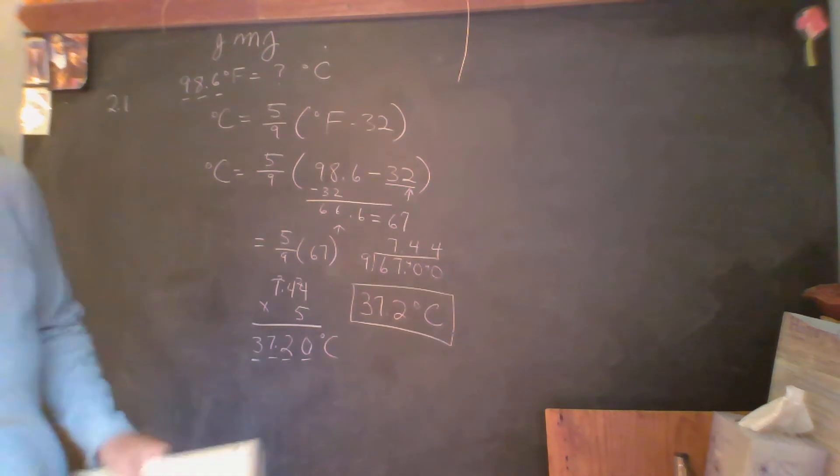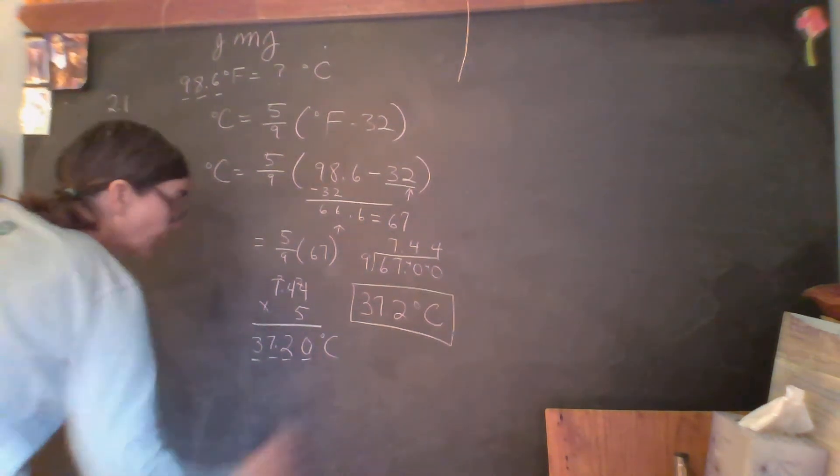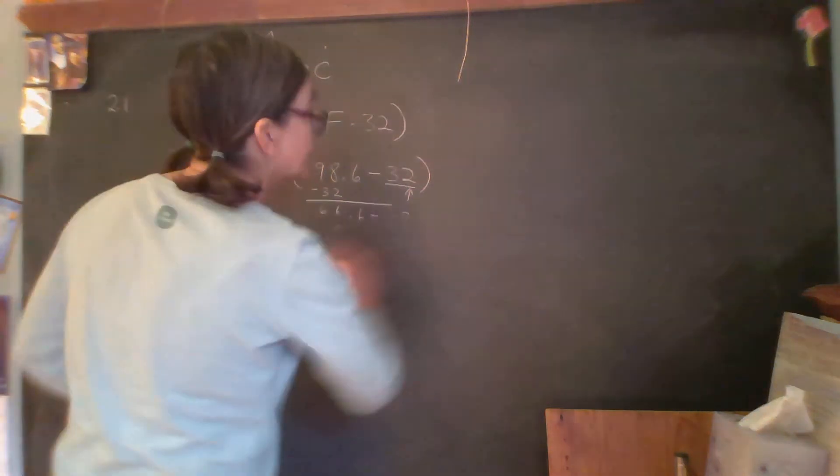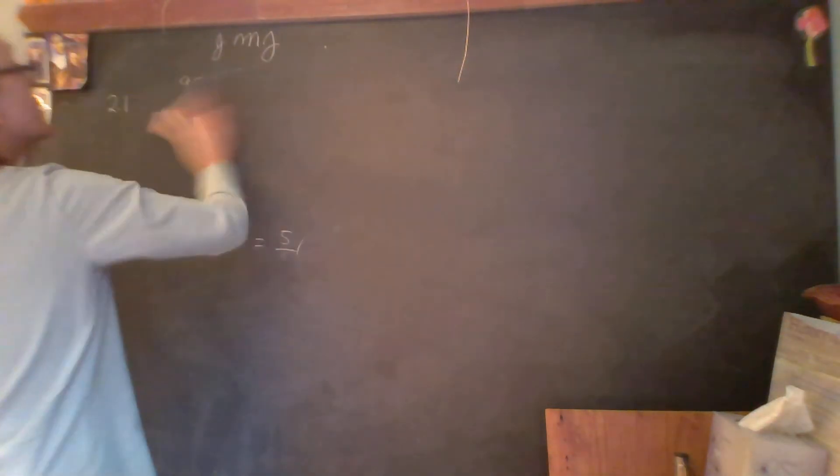Okay, I'm going to go on and do problem 2.2 which is also found on page 46. If water boils at 100.0 degrees Celsius, what is the boiling temperature of water in Fahrenheit? This is the opposite conversion.